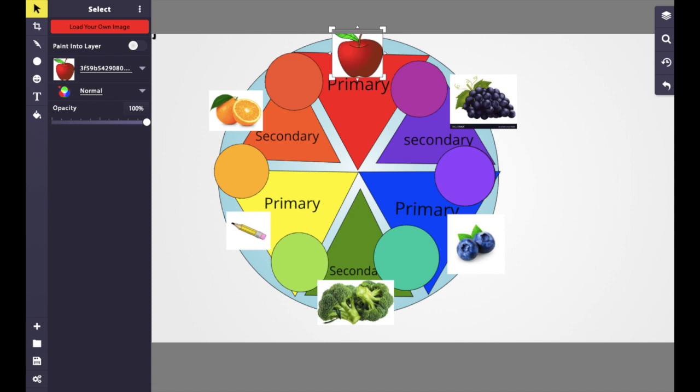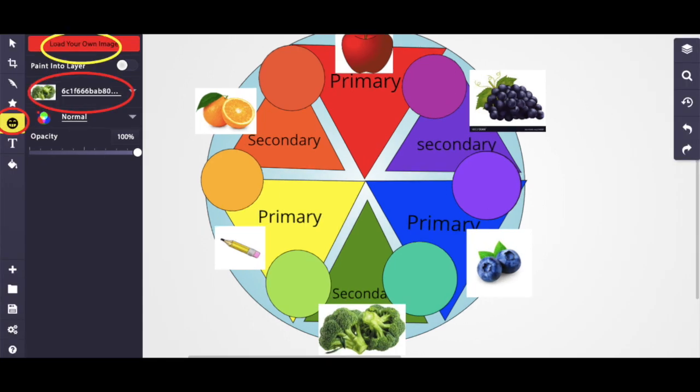Fifth graders, you are going to make a color wheel with the primary and secondary colors, the tertiary colors, and you're going to be adding in images. To add in images, you need to go up to toolbar on the left-hand side and then click on the smiley face and then go up to the red button that says load image and then you'll be able to search the web and get images.